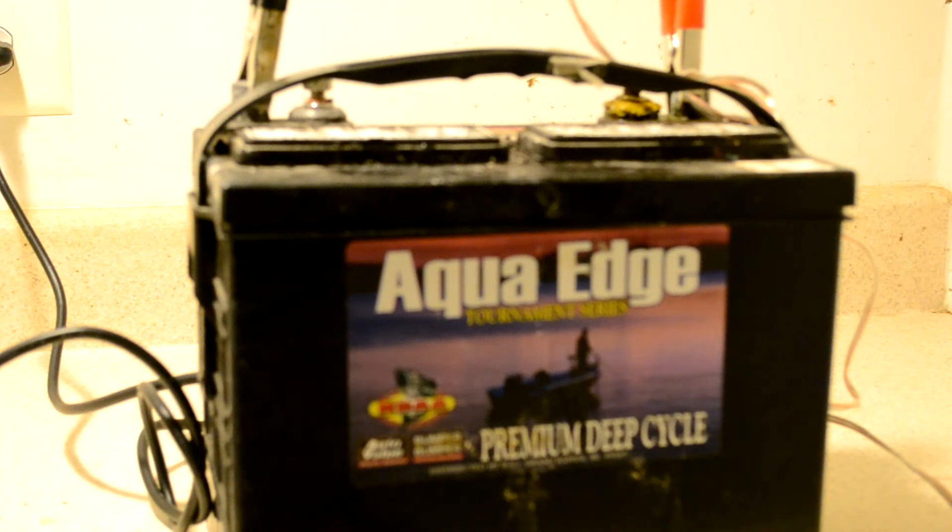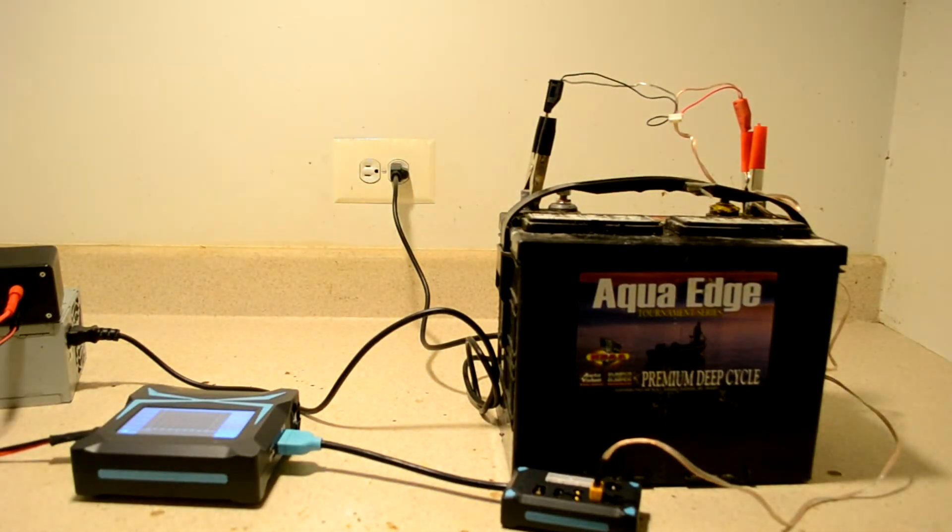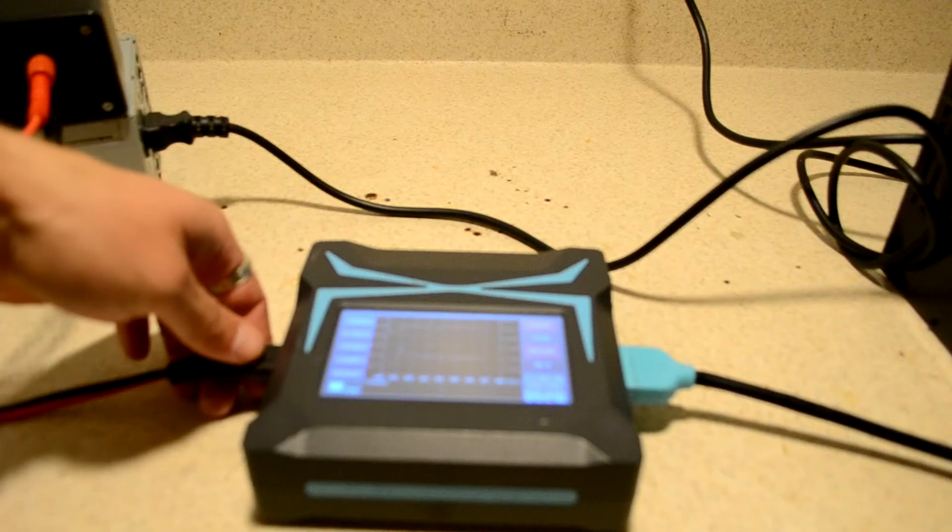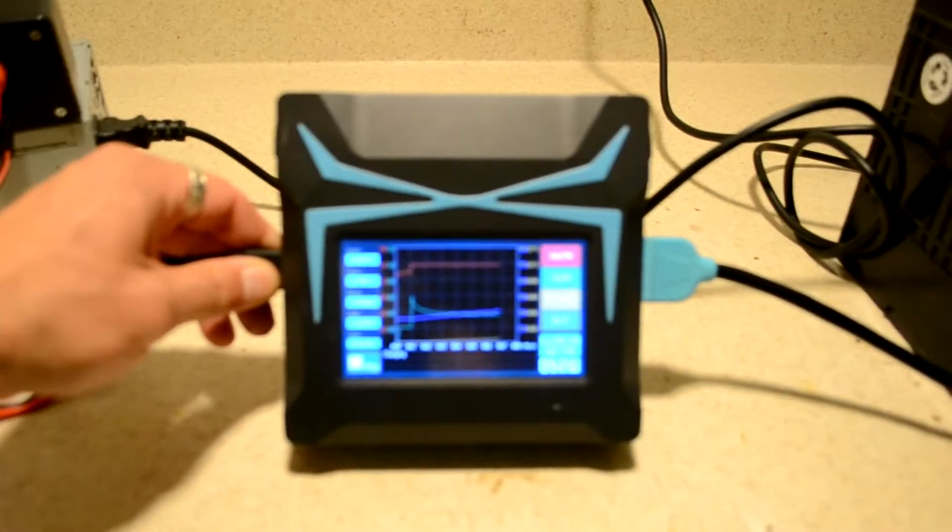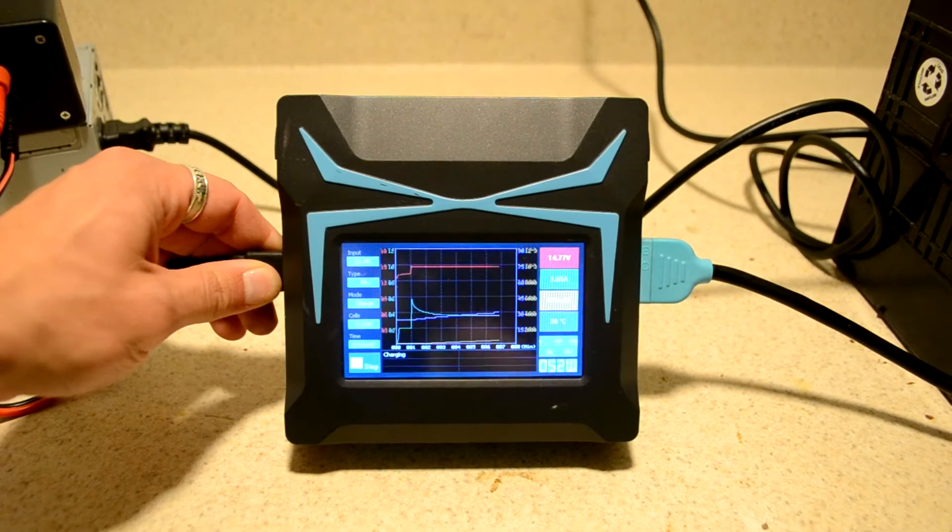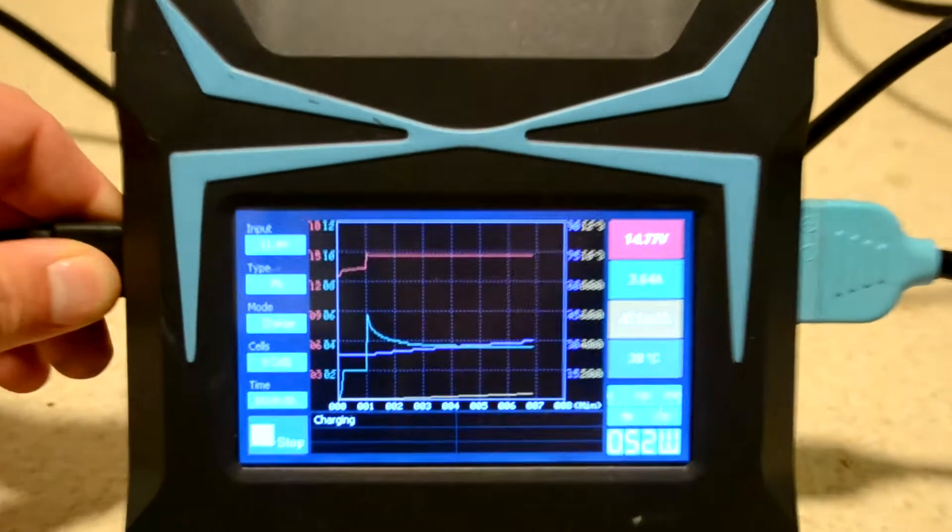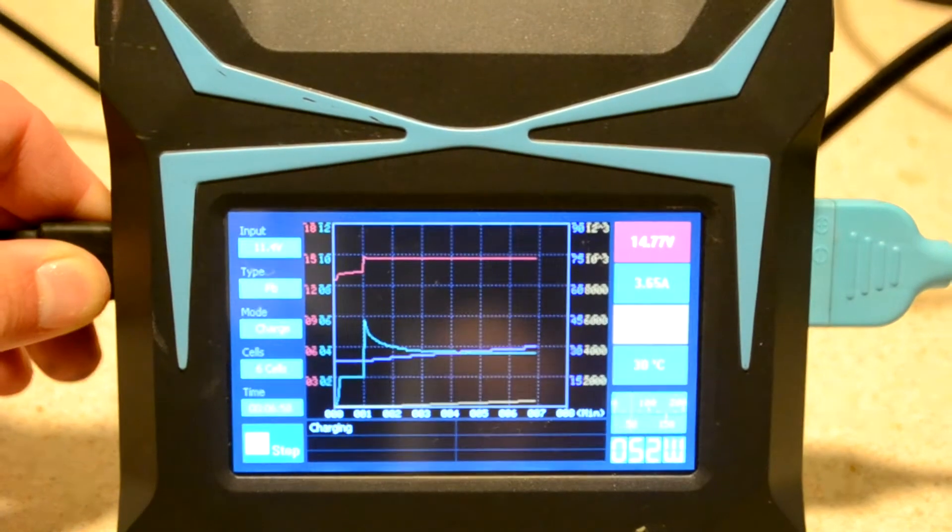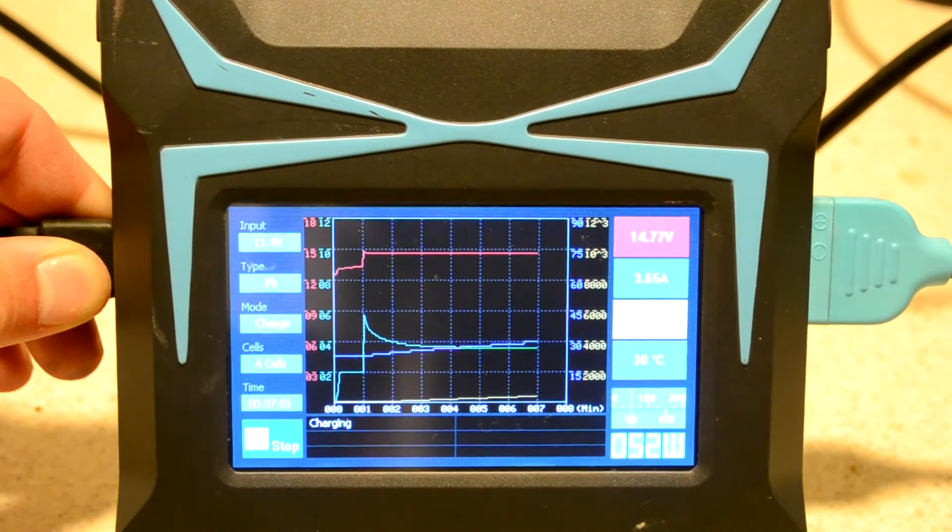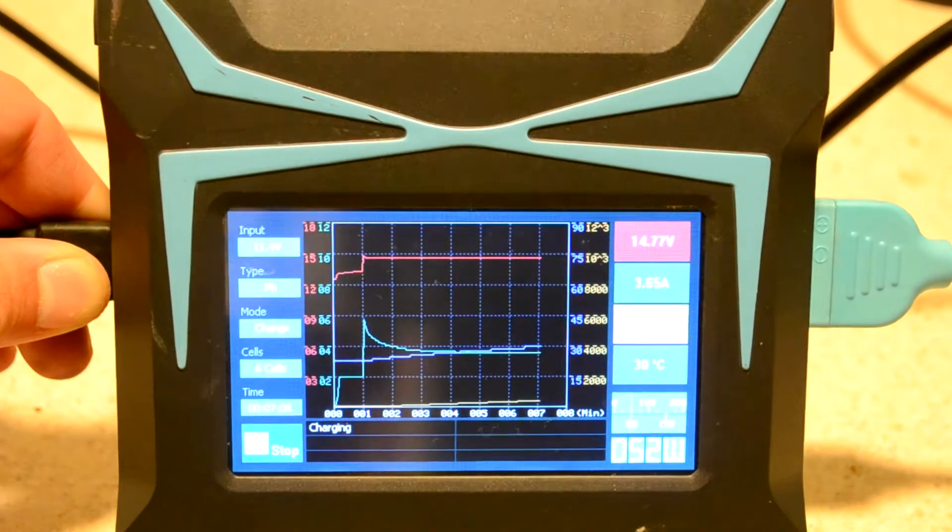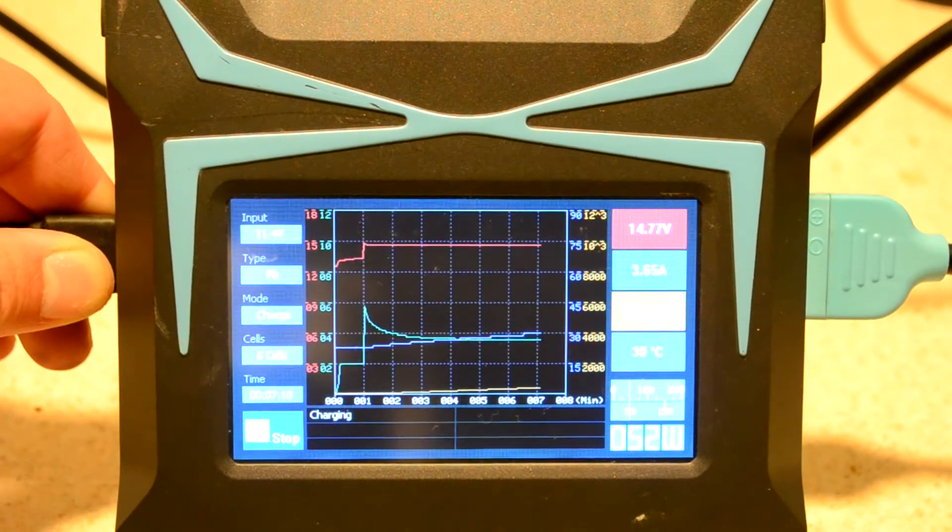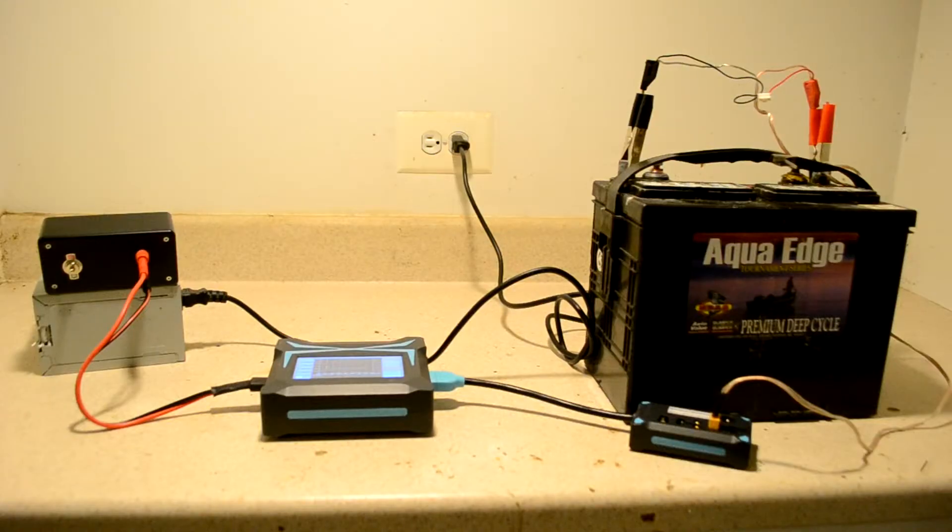And as you'll see here over on my charger, battery's sitting at a comfortable 14.77 volts, which is significantly high for a lead acid battery of this type, a six cell lead acid battery, which would normally equal about 12.8 volts fully charged. So what are we doing here?